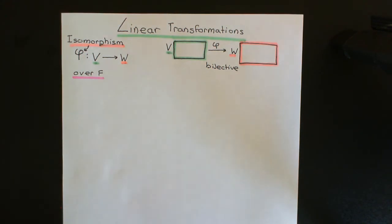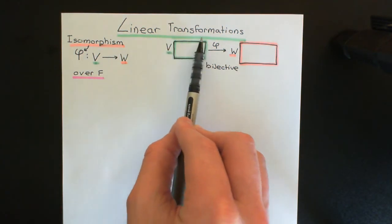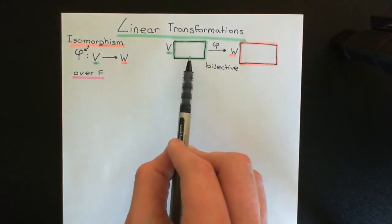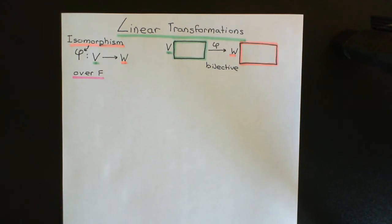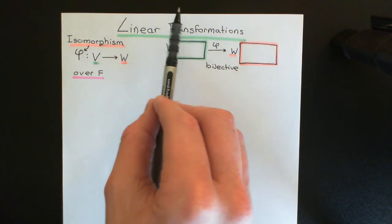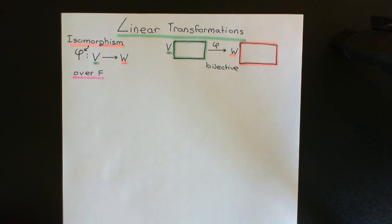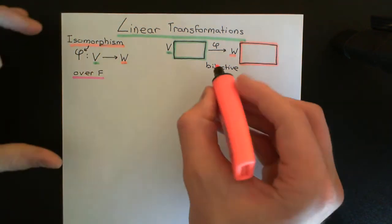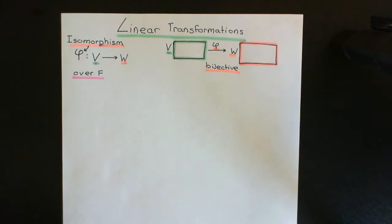What that really means is that this is a relabelling map — relabelling all the entries in this vector space capital V with entries in this vector space capital W. You can think of this as the map that is just changing the symbols of vector space capital V and replacing them with symbols from vector space capital W. However, the mapping phi has to have more properties than just being a bijective map to classify as an isomorphism.